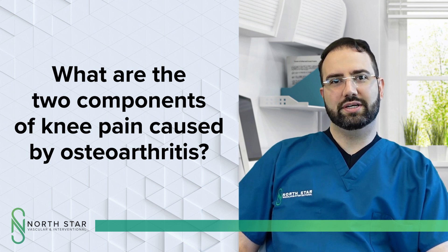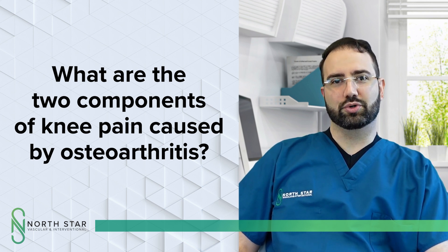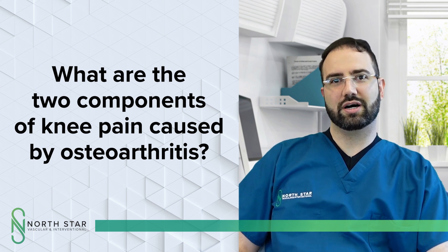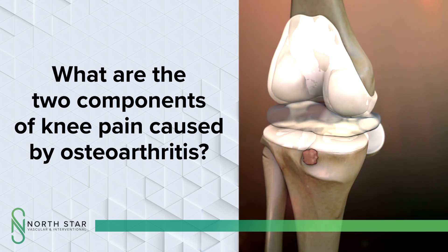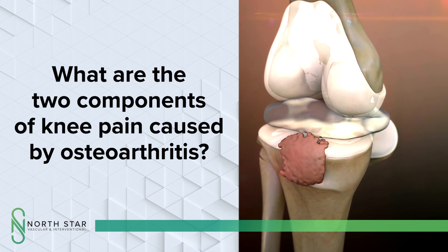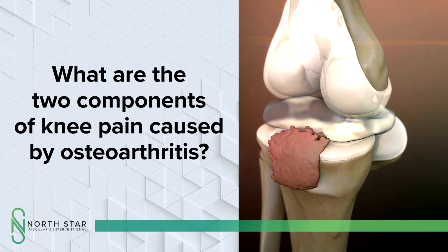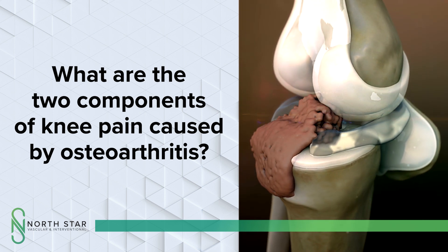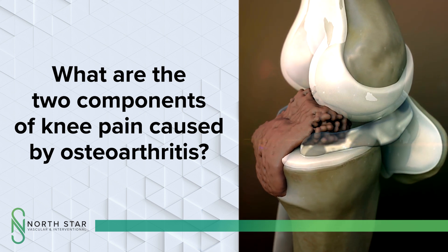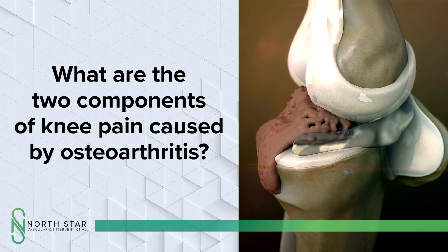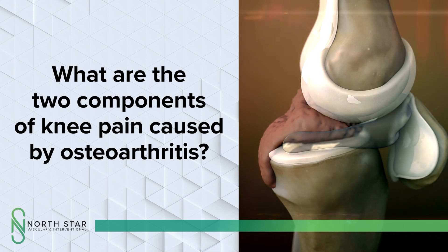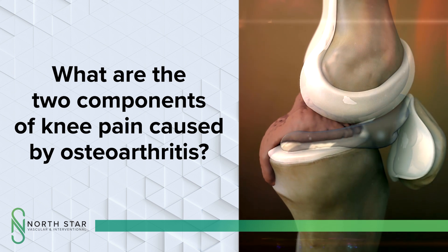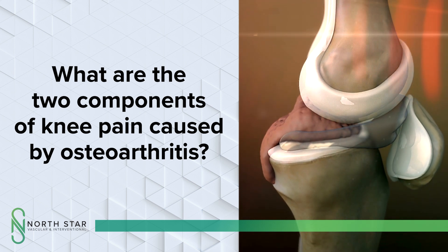Chemical pain is when there is increased blood flow to the joint caused by arthritis. This increased blood flow causes the creation and development of tiny, wispy blood vessels that do not belong there. This process causes thickening of the joint lining and the release of chemicals that cause chemical pain and low-level inflammation.